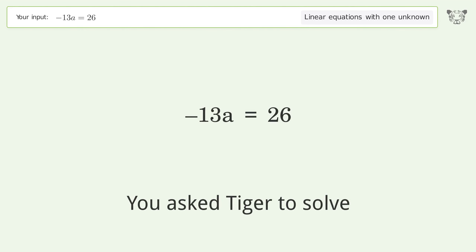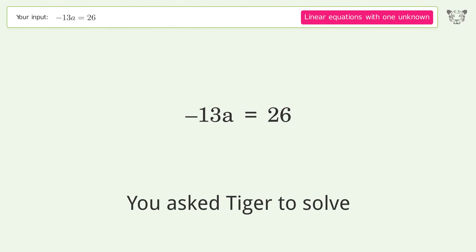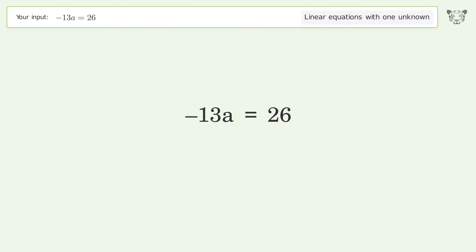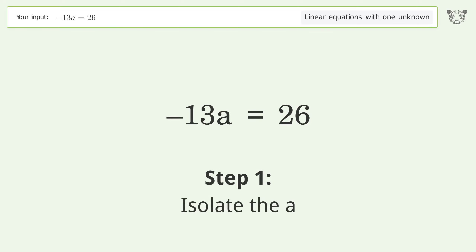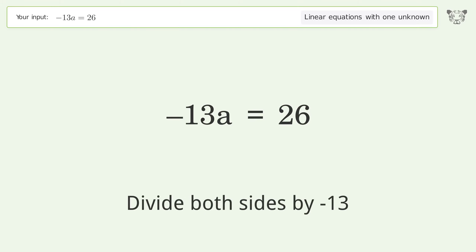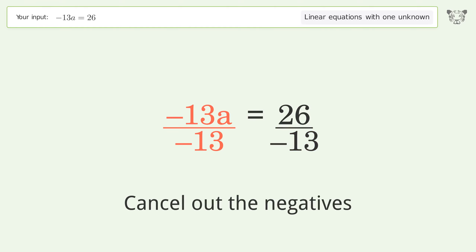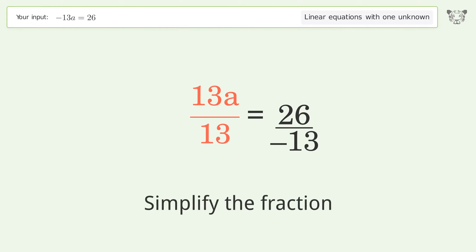You asked Tiger to solve this — it deals with linear equations with one unknown. The final result is a equals negative 2. Let's solve it step by step: isolate the a, divide both sides by negative 13, cancel out the negatives, and simplify the fraction.